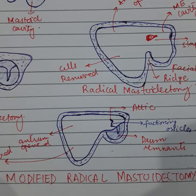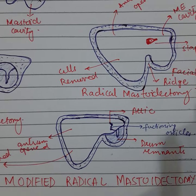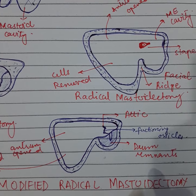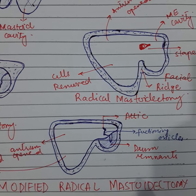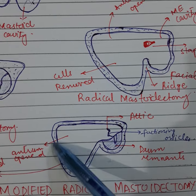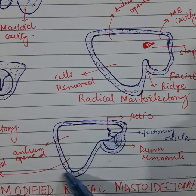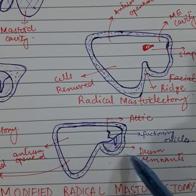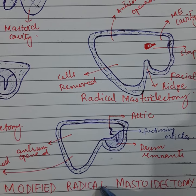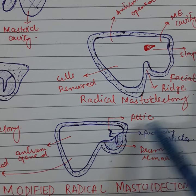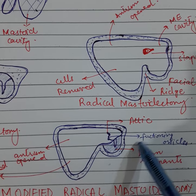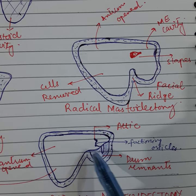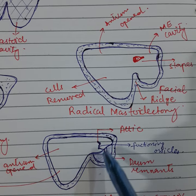Modified radical mastoidectomy is done to eradicate the disease of the attic and mastoid, both of which are exteriorized into the external auditory canal by removal of the posterior meatal wall or lateral attic wall. Here you can see the mastoid cavity and the attic part of the middle ear are exteriorized and both are directly opened into the external auditory canal. The difference from radical mastoidectomy is that the tympanic membrane remnant and the functioning ossicles and reversible mucosa and functioning part of the eustachian tube are preserved.